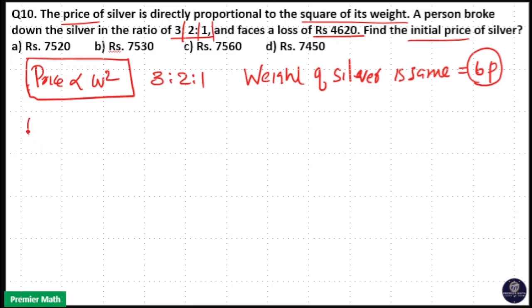We have to find out price before breaking and price after breaking. Price before breaking is initial price, that is equal to square of its weight, that is 6 part square, equal to 36 part square.